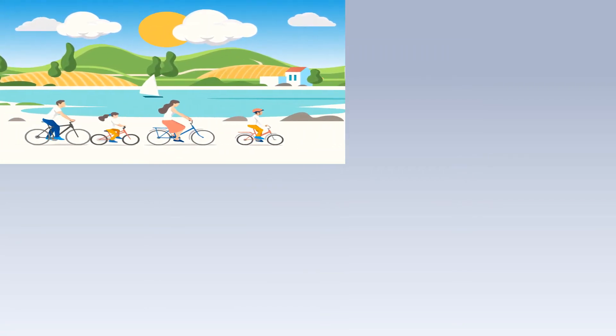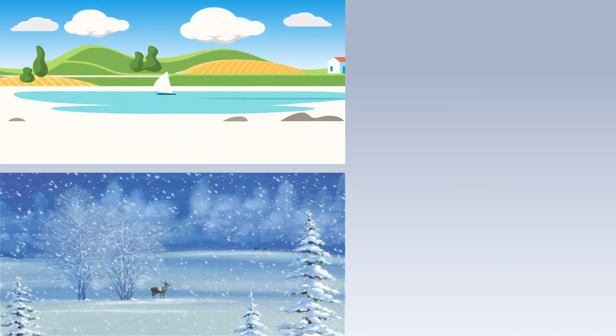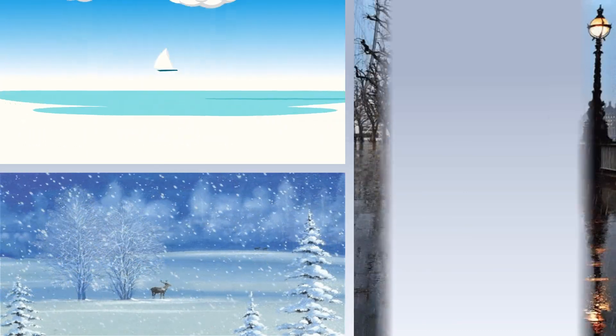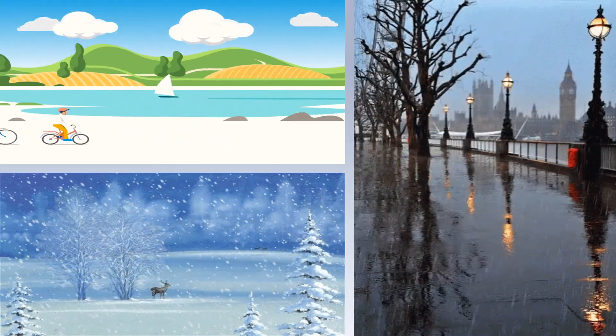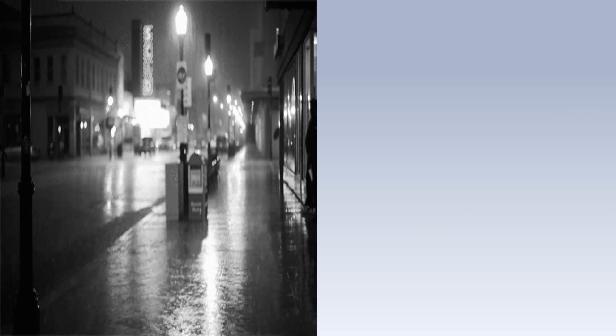Let us now study about climate. Climate is the weather condition of an area over a long period of time. Climate of a place depends on its average monthly or yearly temperature and the average amount of rainfall or snow.